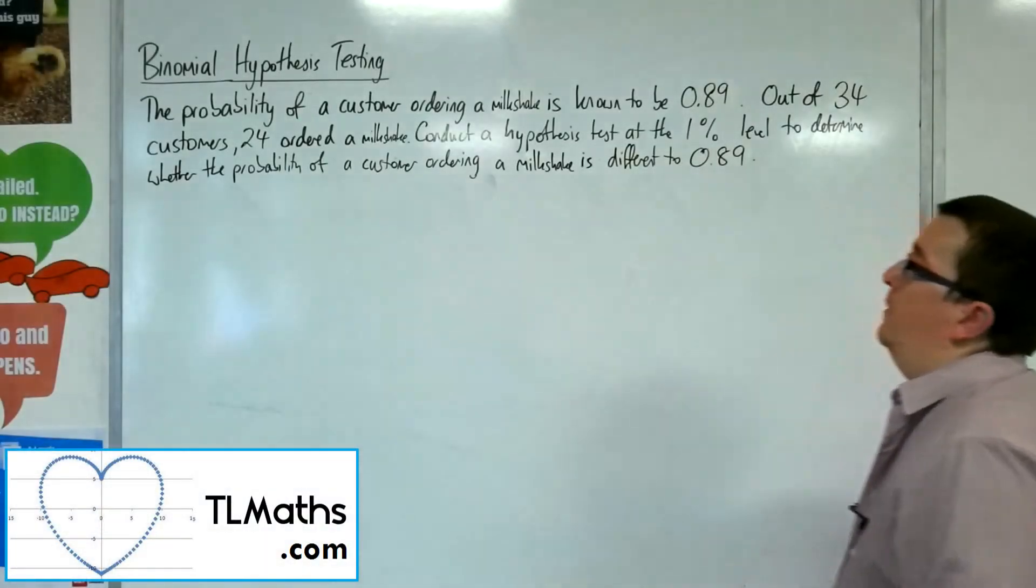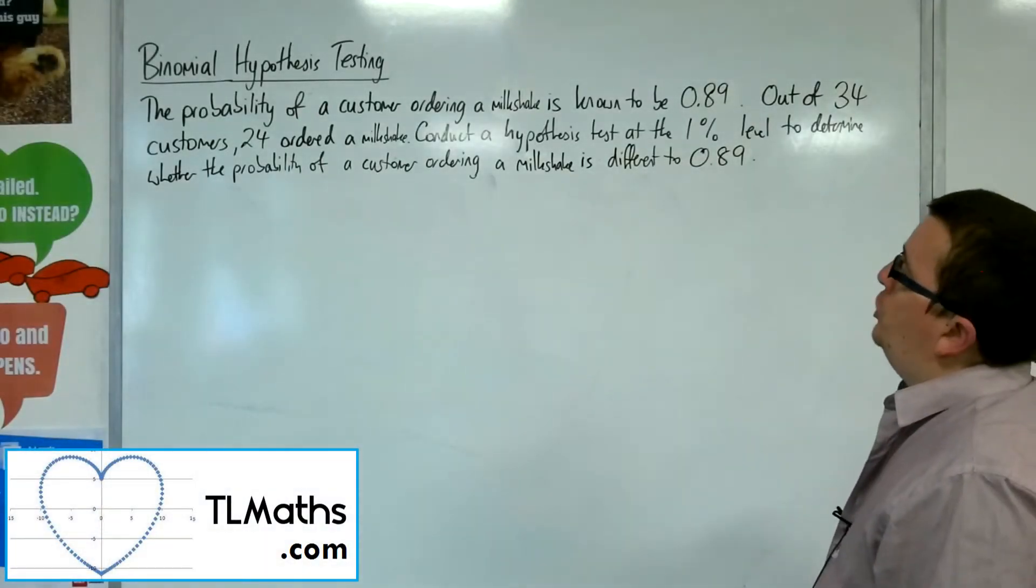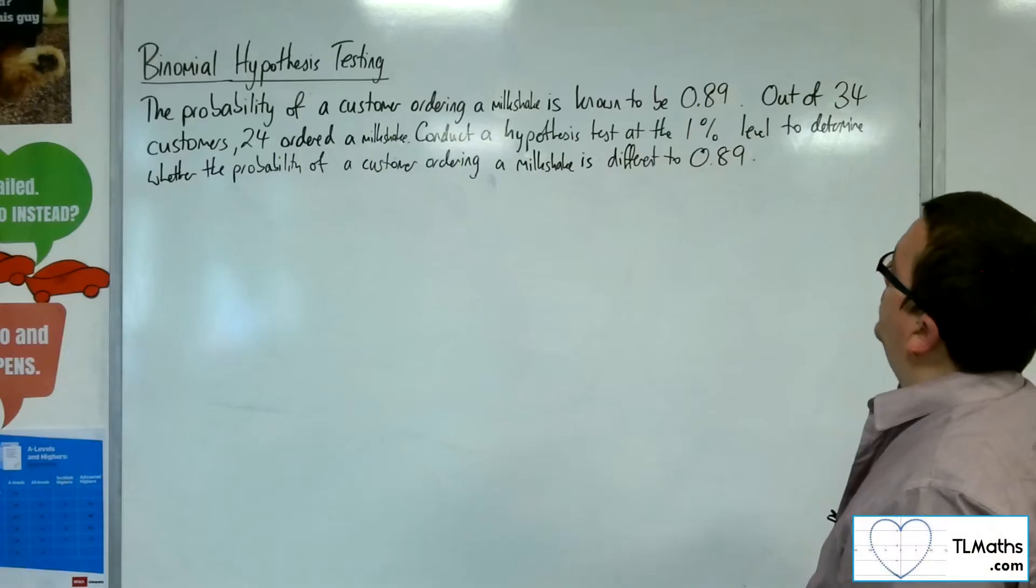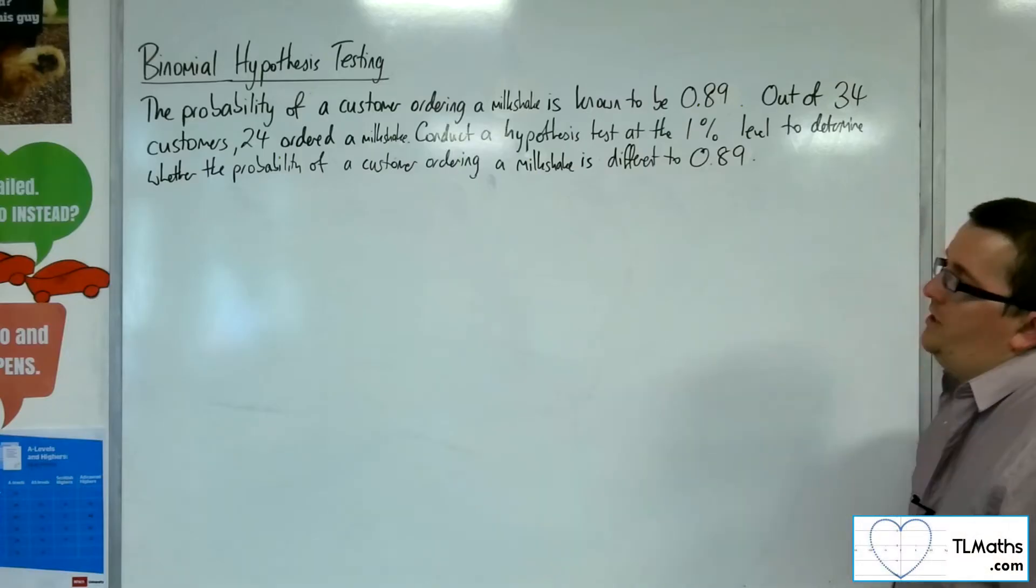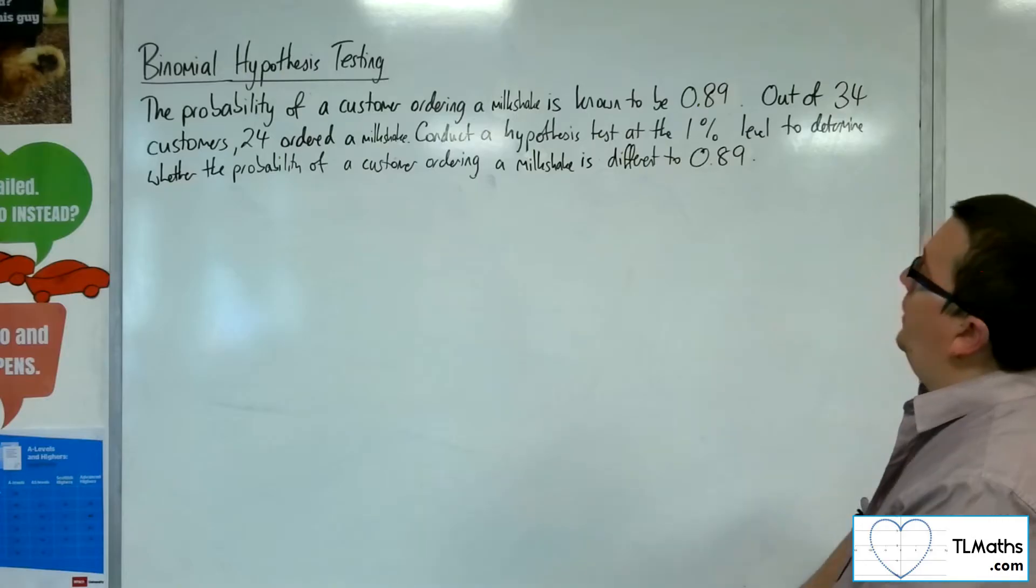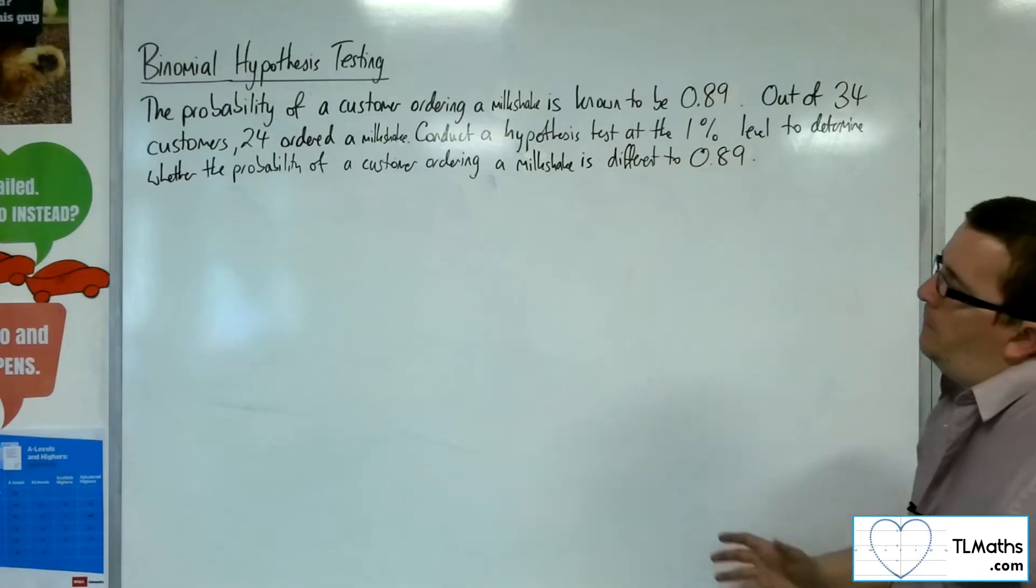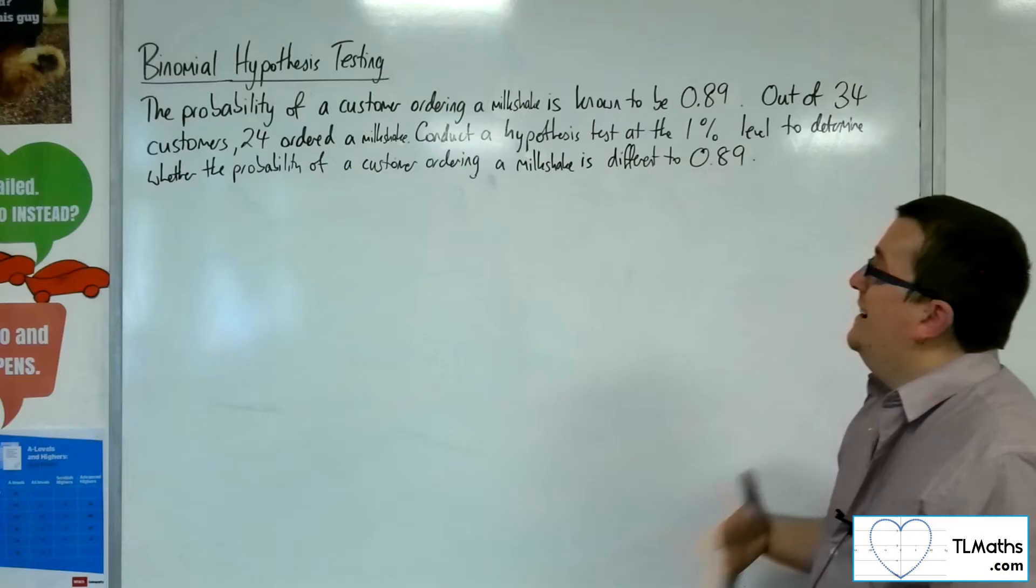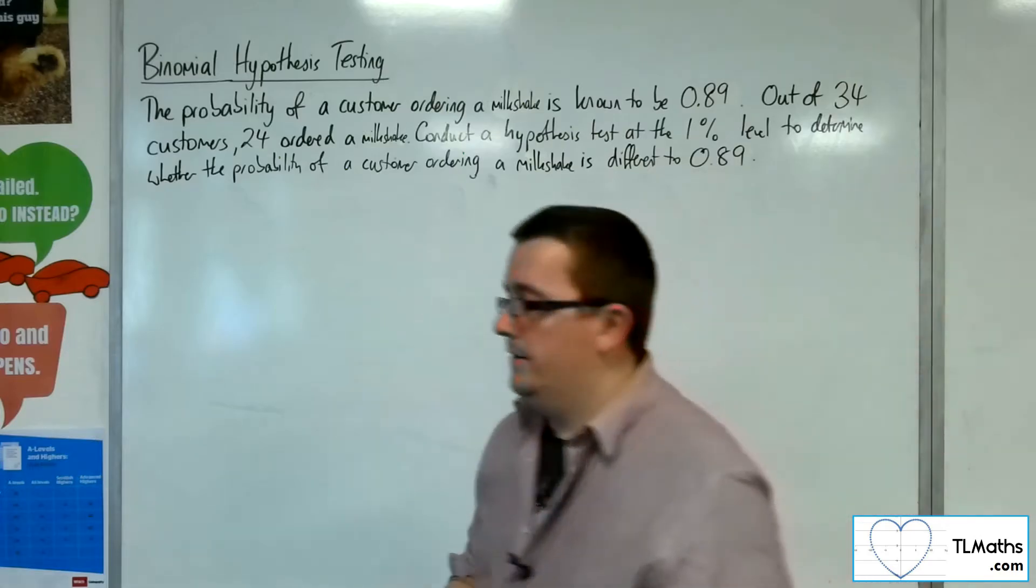In this problem, the probability of a customer ordering a milkshake is known to be 0.89. Out of 34 customers, 24 ordered a milkshake. Conduct a hypothesis test at the 1% level to determine whether the probability of a customer ordering a milkshake is different to 0.89.